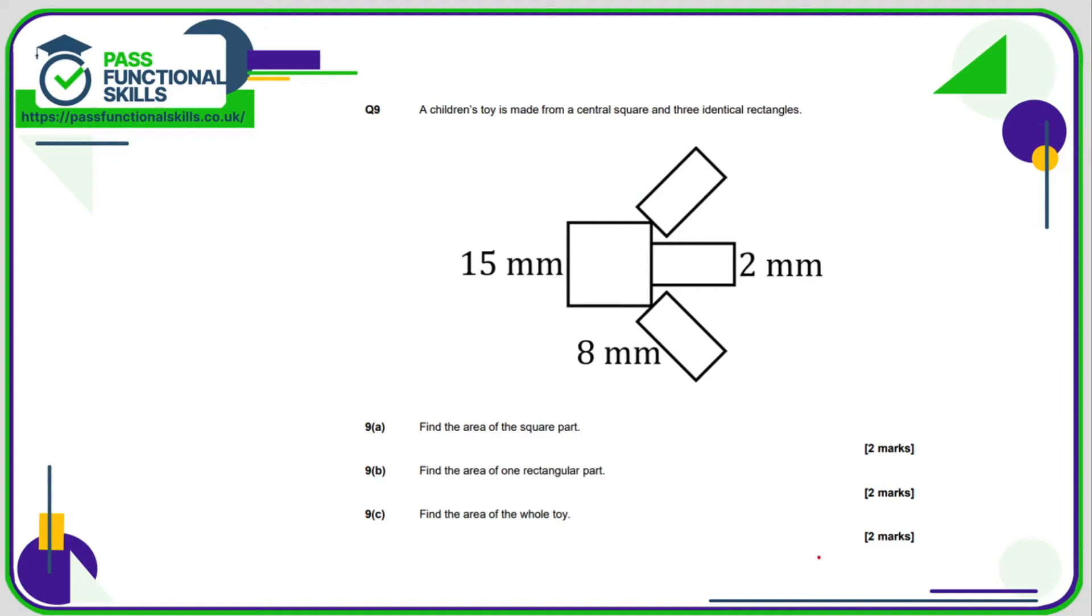Question number 9, we want the area of the square part. Well, that's 15 times by 15, which is 225 millimeters squared. One rectangular part is 8 by 2, which is 16 millimeters squared. So the area of the whole toy is 16 plus 16 plus 16 plus 225. And that comes to a total of 273 millimeters squared.